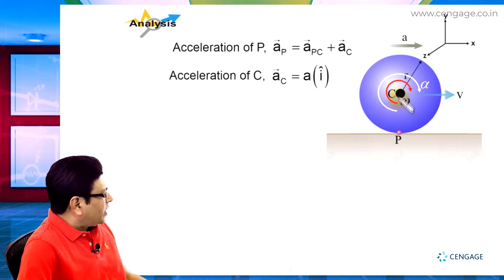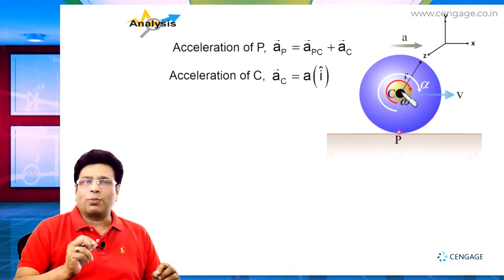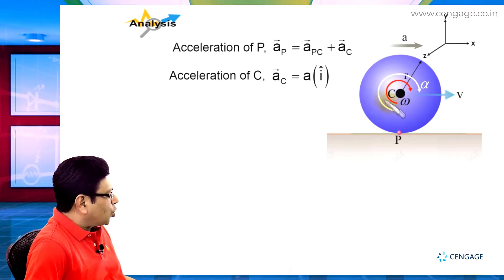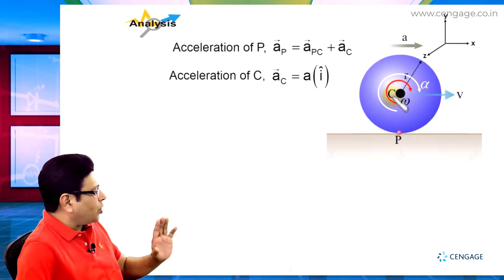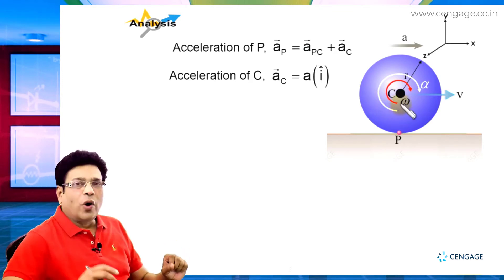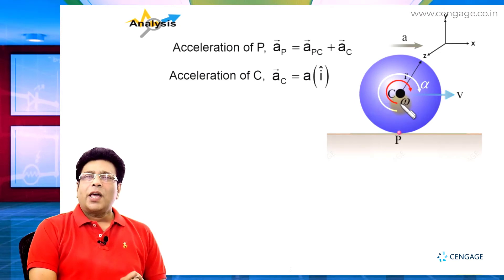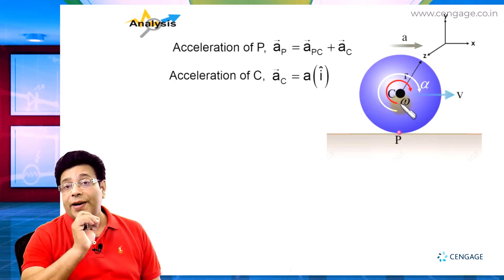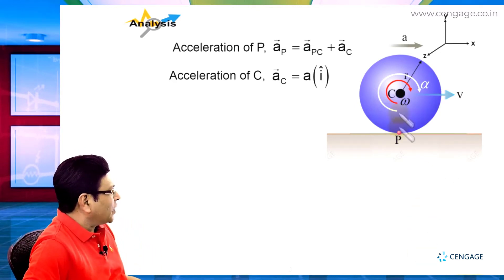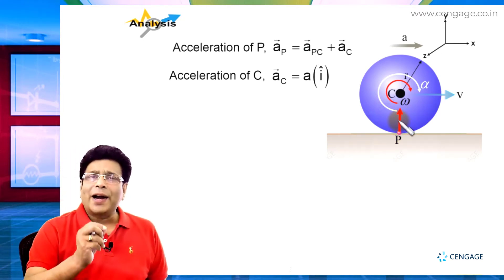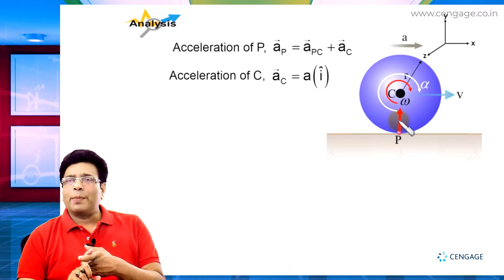Now, consider from the frame of reference of the centre of the disk. From the centre, we observe the motion of the disk as circular — more precisely, non-uniform circular motion. Since it is non-uniform circular motion, it should have both radial acceleration and tangential acceleration. The radial acceleration is directed toward the centre, and its magnitude is omega squared multiplied by r.